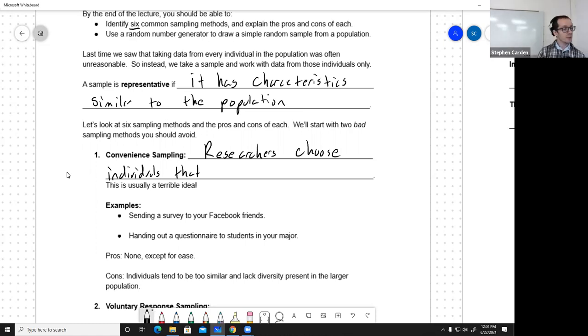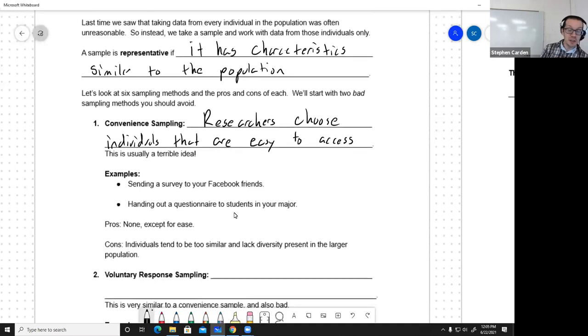Convenience sampling: researchers choose individuals that are easy to access. Basically, the researchers are lazy. They don't put in the effort they need to get a representative sample. Two examples: if you send out a survey to people in your connected community through social media, that's a convenience sample. If you hand out a questionnaire just to students in your major and you don't collect some of the larger diversity of majors that are on campus, you're doing a convenience sample.